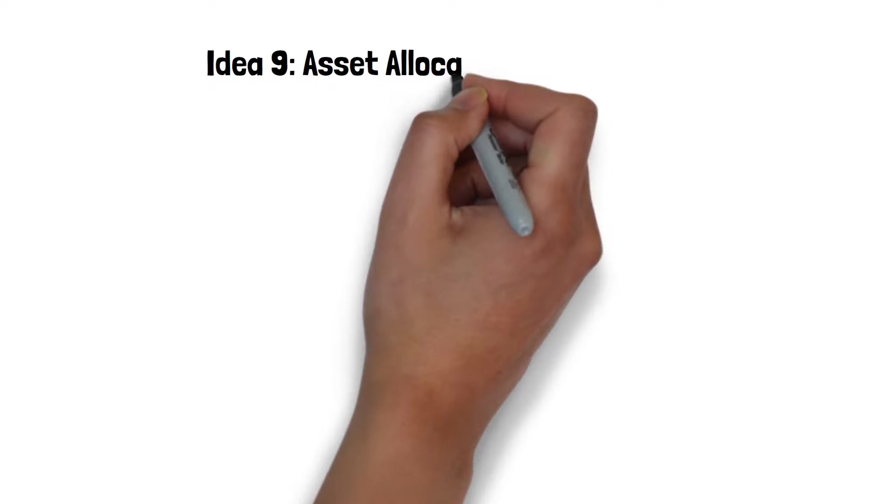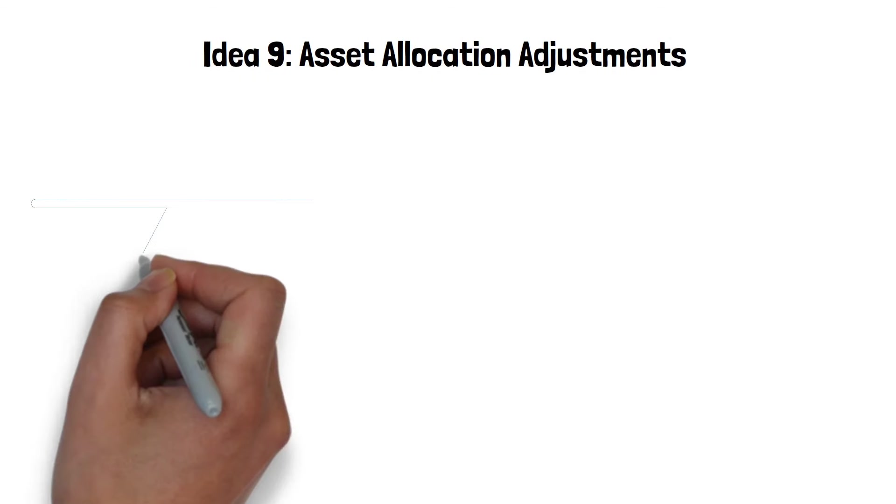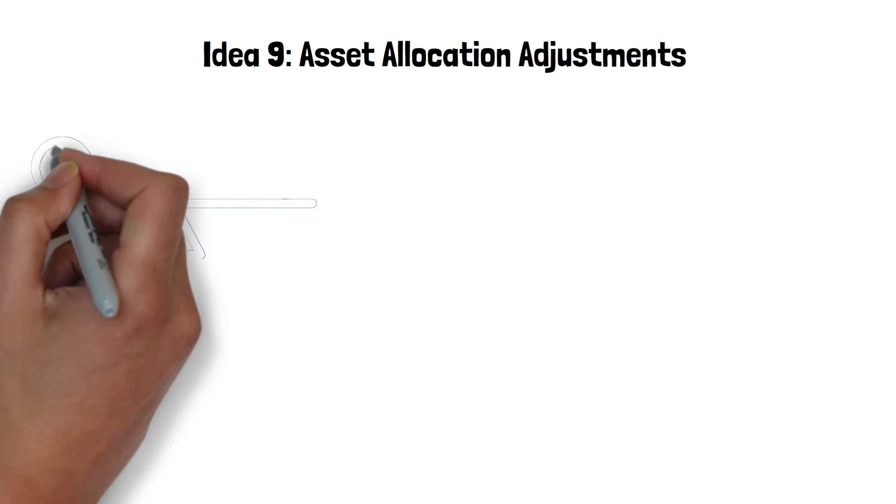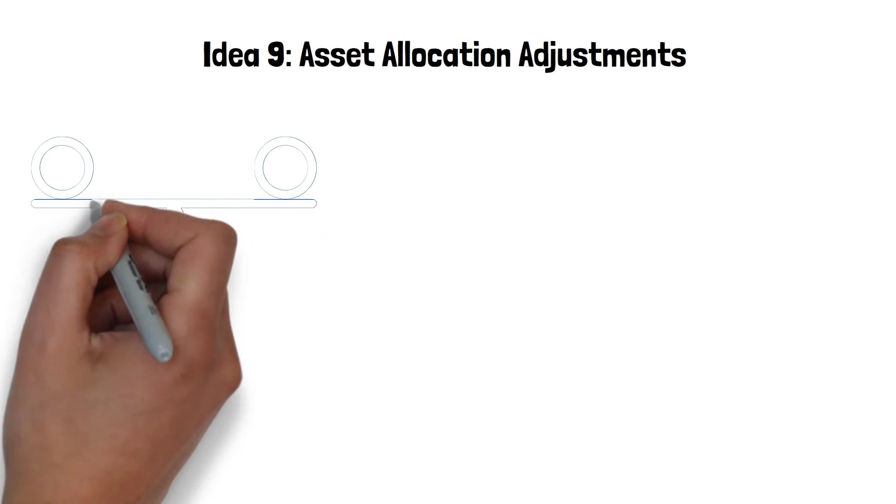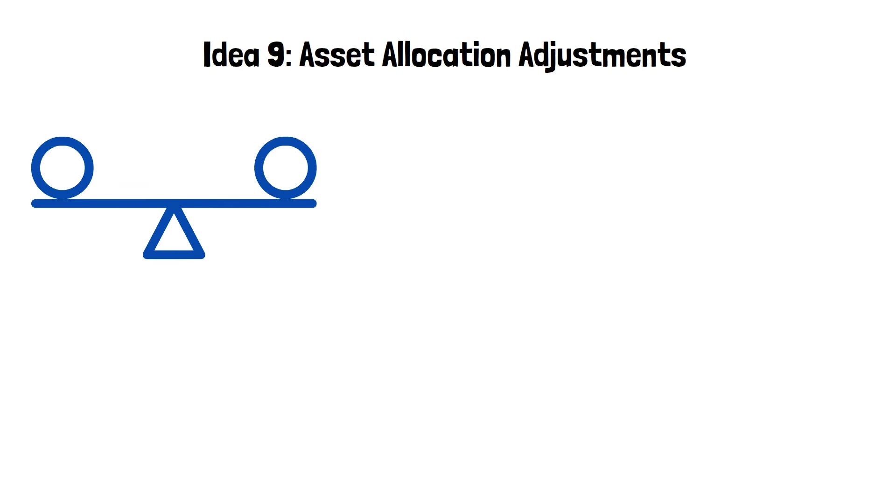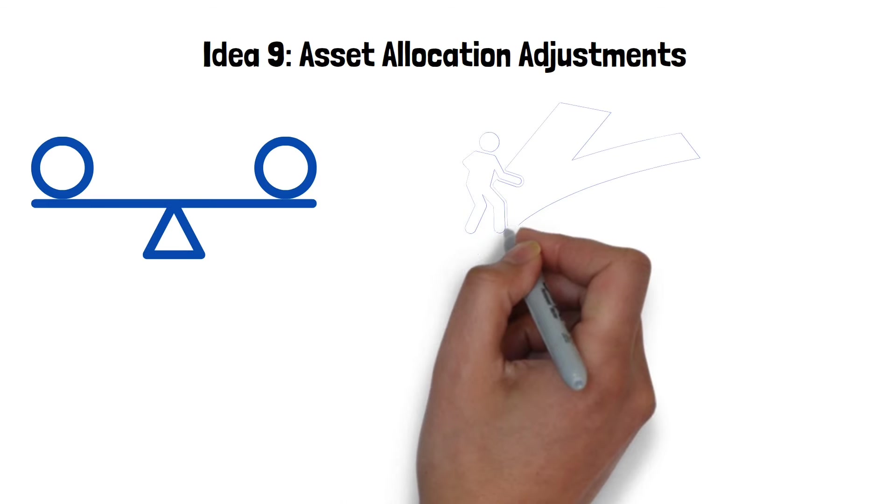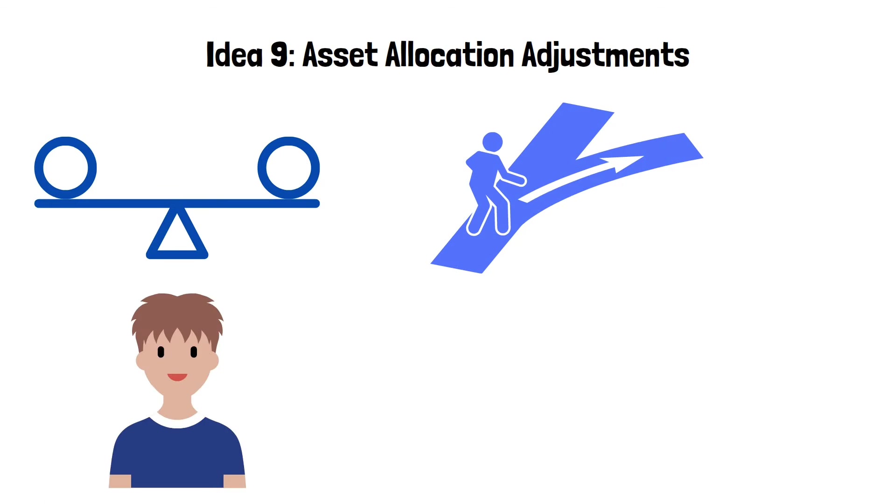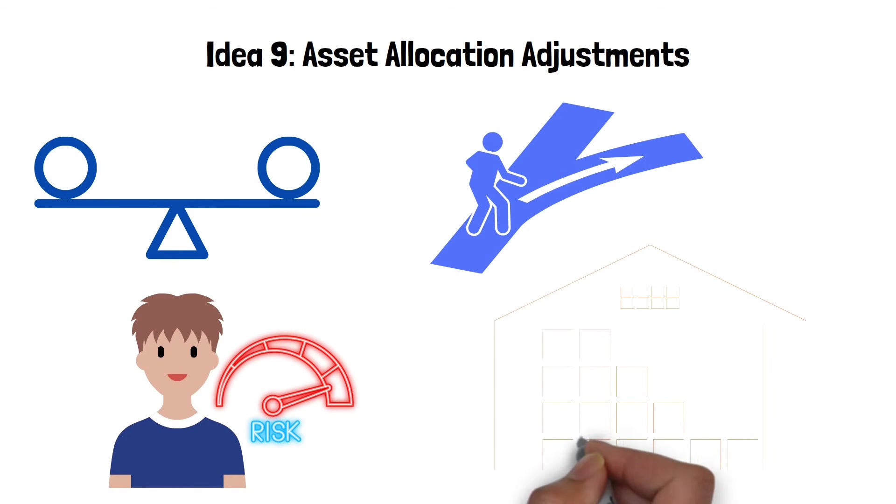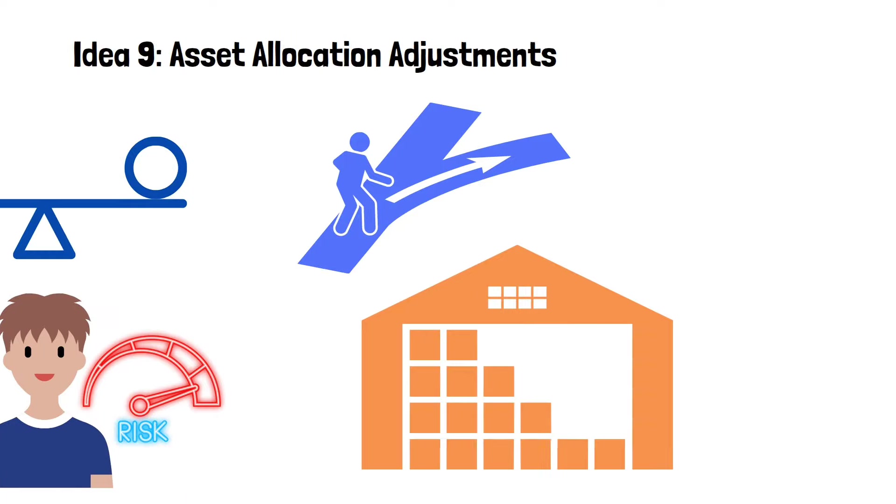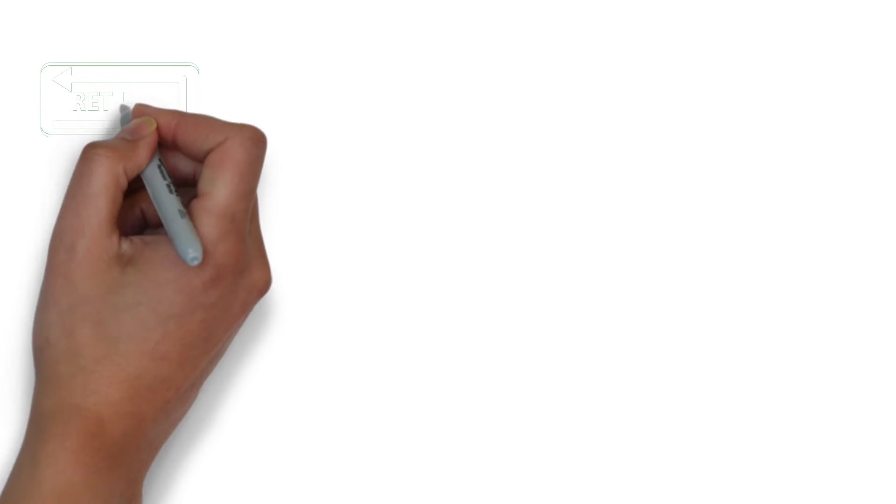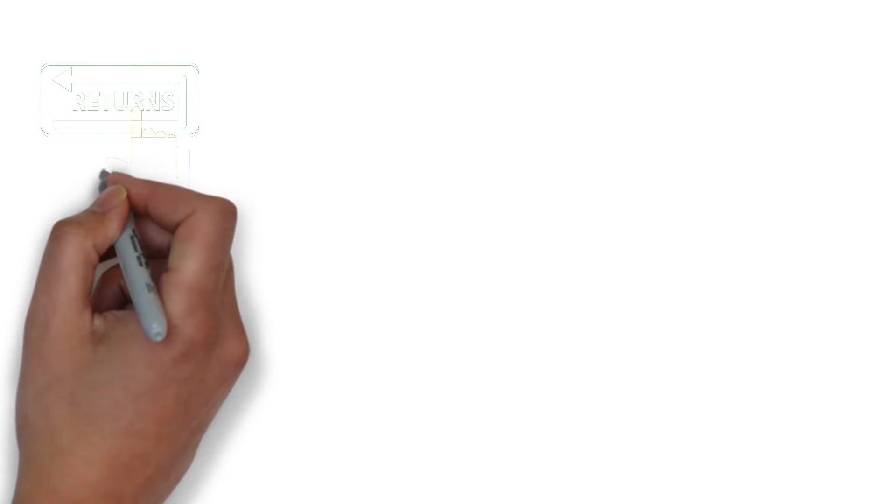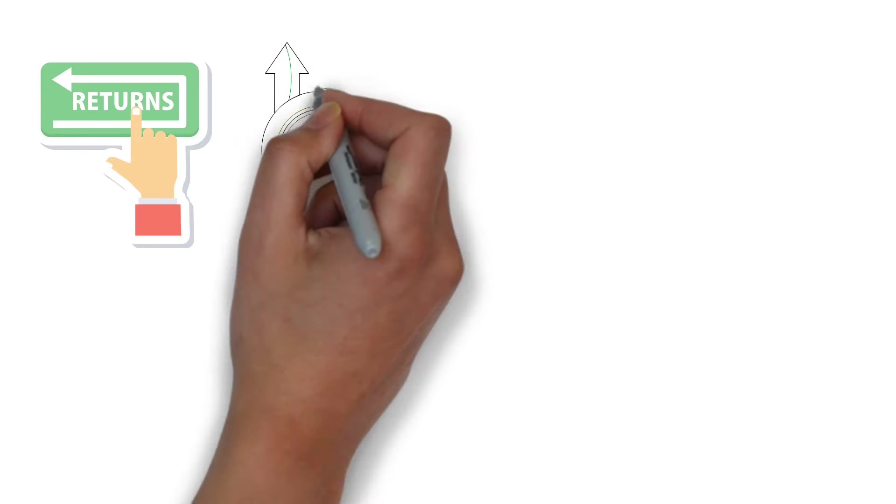Idea 9: Asset allocation adjustments. Asset allocation is about finding the right balance between different types of investments to optimize returns while managing risk. Over time, as your life circumstances and goals change, you might need to adjust this balance. When you're young and have many working years ahead of you, you can often afford to take more risks. Typically, this means you can have a higher proportion of stocks in your portfolio. Stocks are known for their potential to deliver higher returns over the long term, but they also come with more volatility. Their values can go up and down quite a bit.